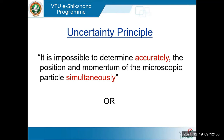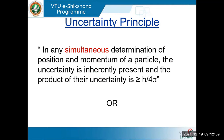The same principle can be stated as: in any simultaneous determination of position and momentum of a particle, uncertainty is inherently present, and the product of their uncertainties is always greater than or equal to h/4π. This specific form tells us the range of error — the uncertainty is of the order of greater than or equal to h/4π.